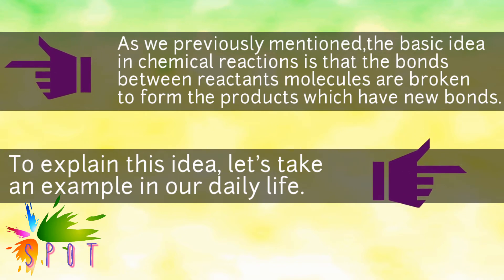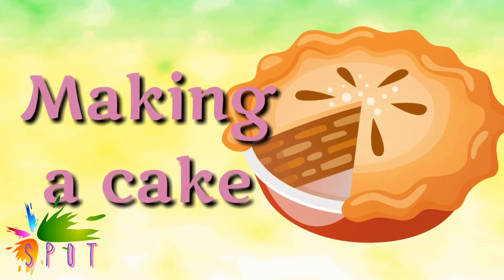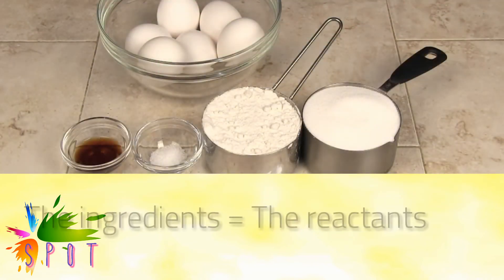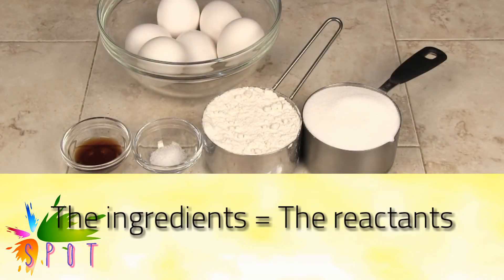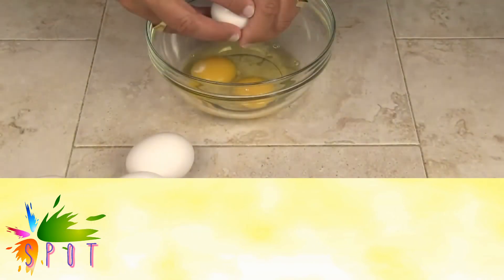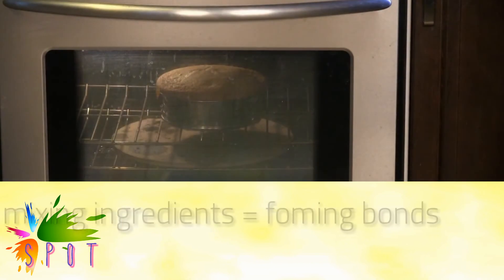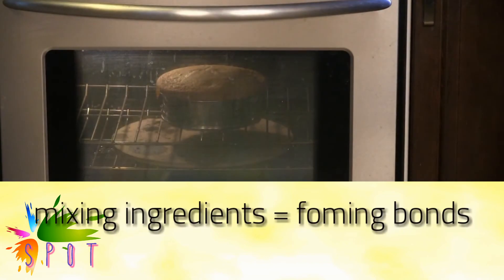To explain this idea, let's take an example in our daily life. The ingredients represent the reactants. Breaking eggs represents the process of breaking bonds. Mixing ingredients represents forming product bonds.